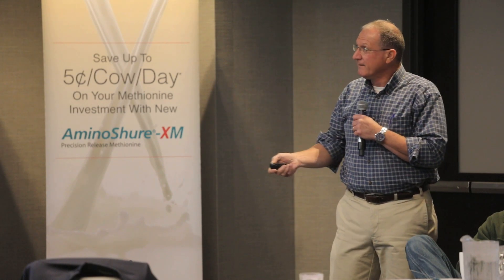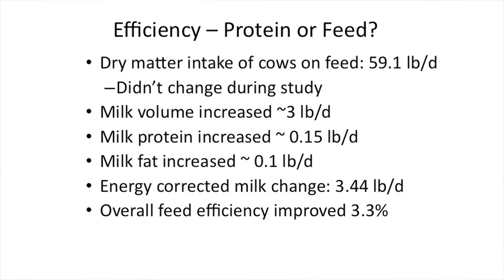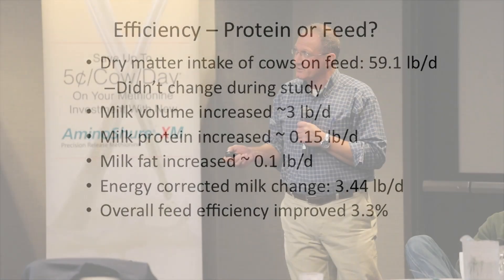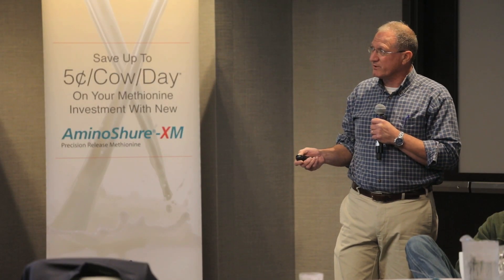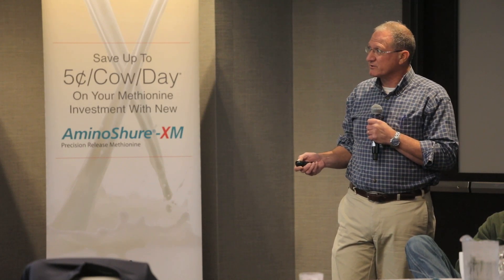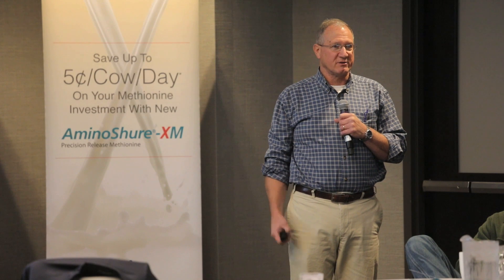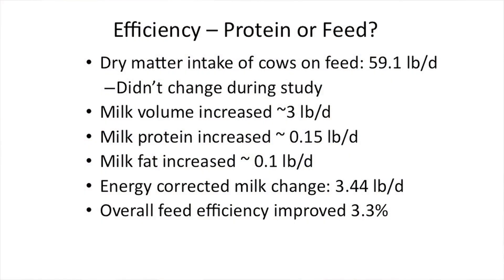Which one do you model? There's always a troubling thing. So here's milk protein, here's milk fat — noisy data from daily milk weights. Is it a protein efficiency thing or a feed efficiency thing? Dry matter intake was 59.1 — didn't change during the study. Milk volume increased 3 pounds. Milk protein increased 0.15 pounds. Milk fat increased 0.1 pounds. Energy-corrected milk change was 3.44 pounds per day. Overall feed efficiency improved 3.3%.